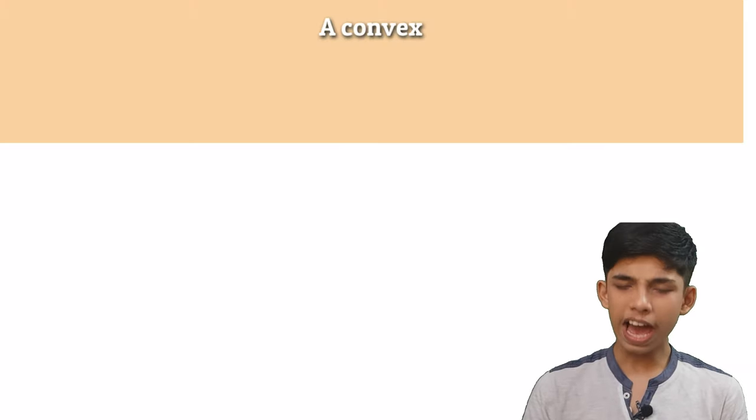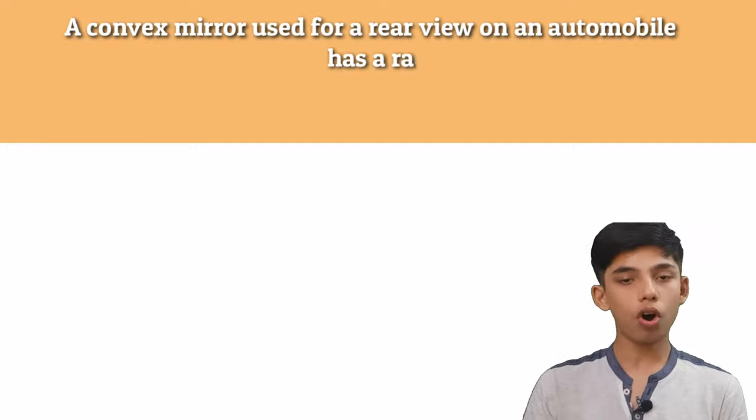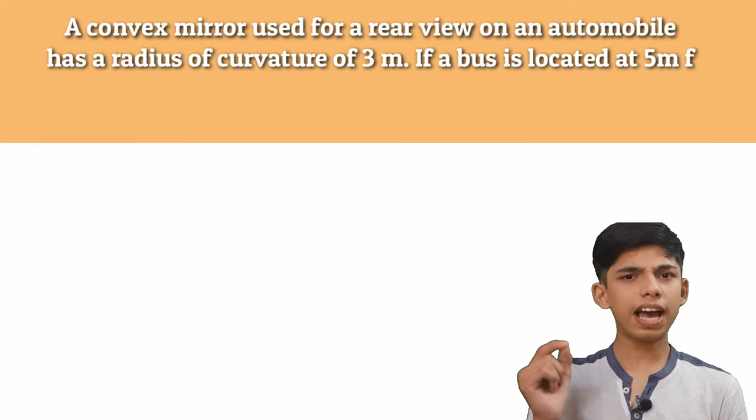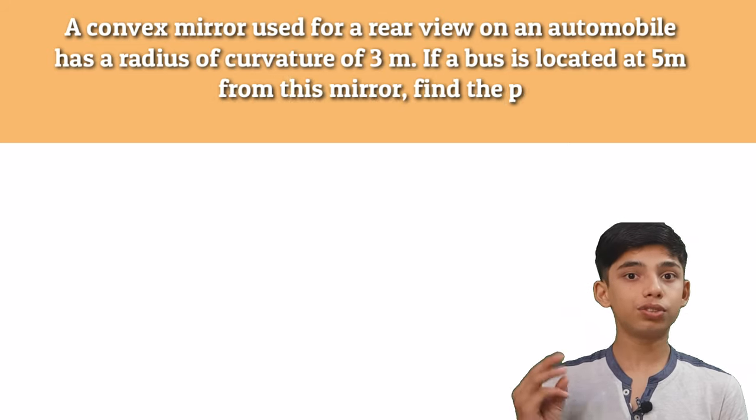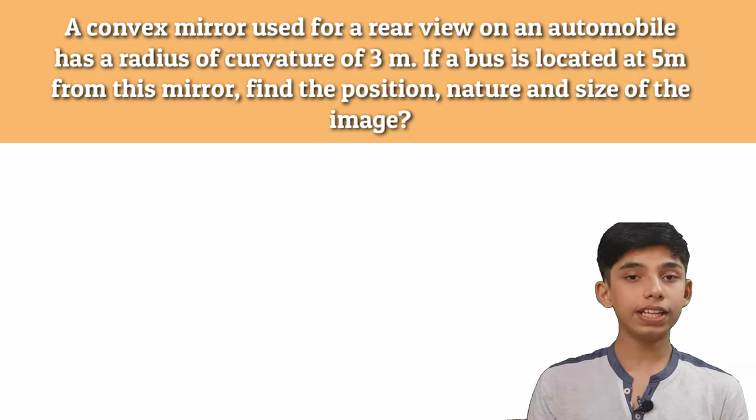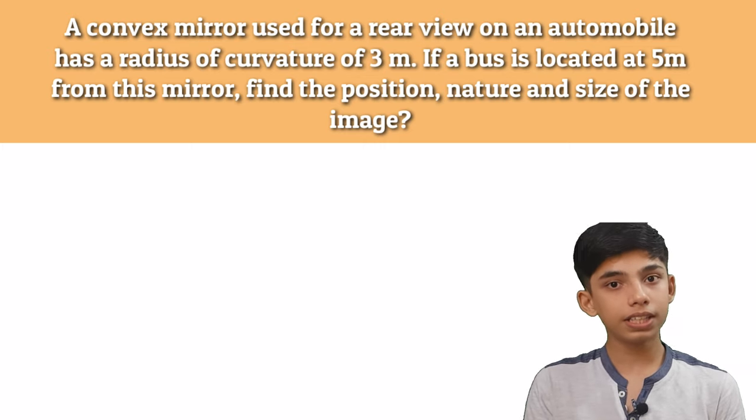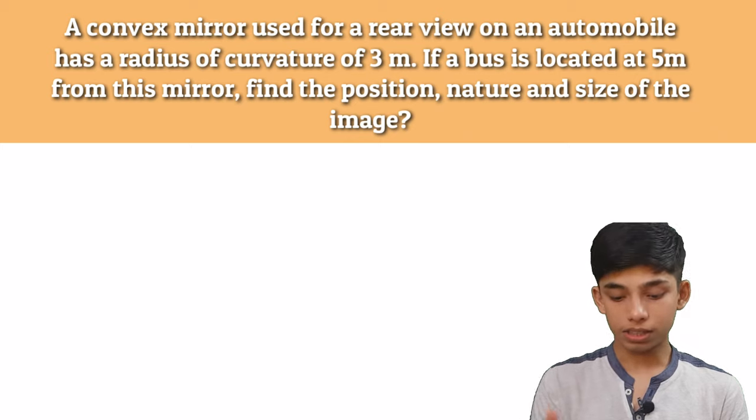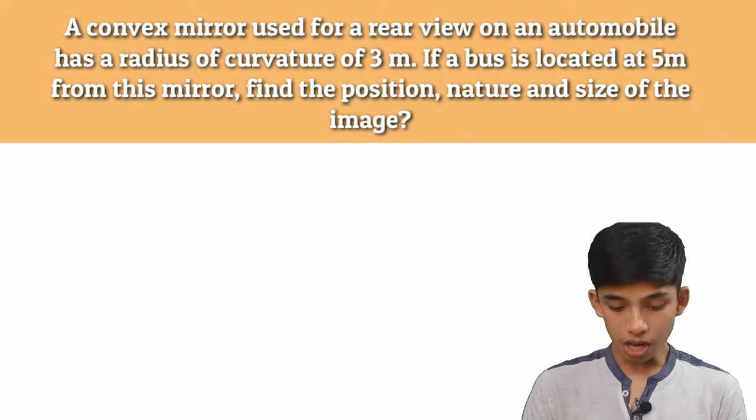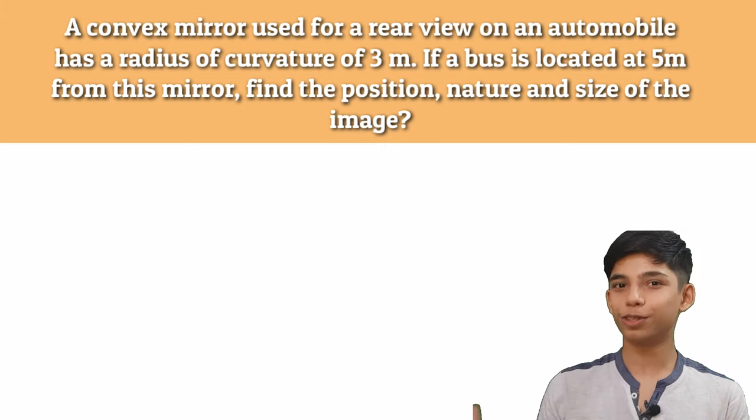So in this question, we have our convex mirror and it is used for a rear view on an automobile. Now it is given that it has a radius of curvature as 3 meters and if a bus is located at 5 meter from this mirror, so our object in this case is our bus. So now they are saying that we have to find the position, nature and the size of the image. Simple straight question.